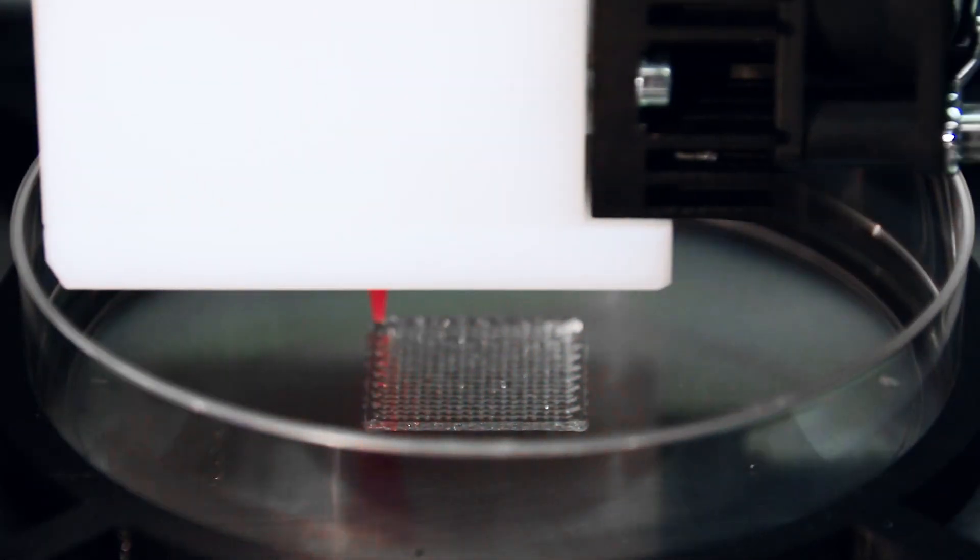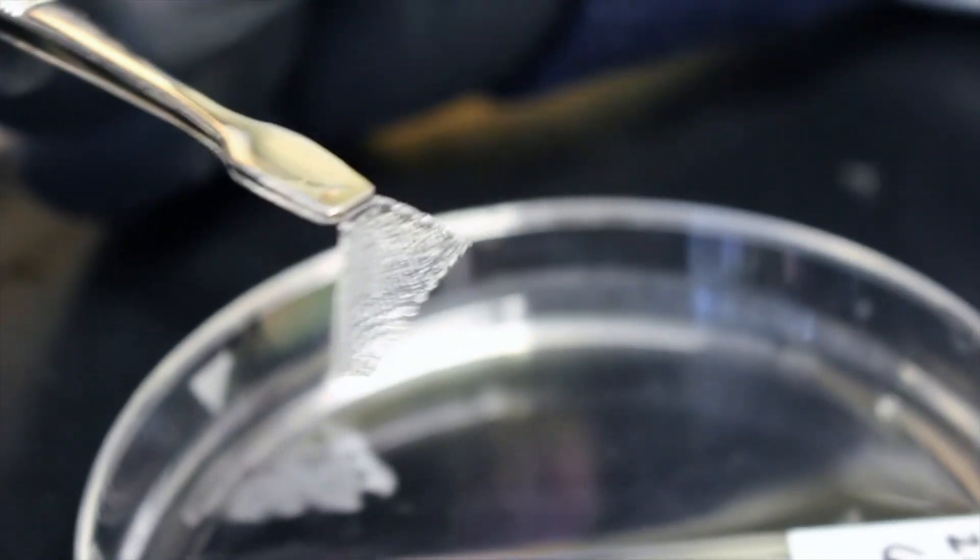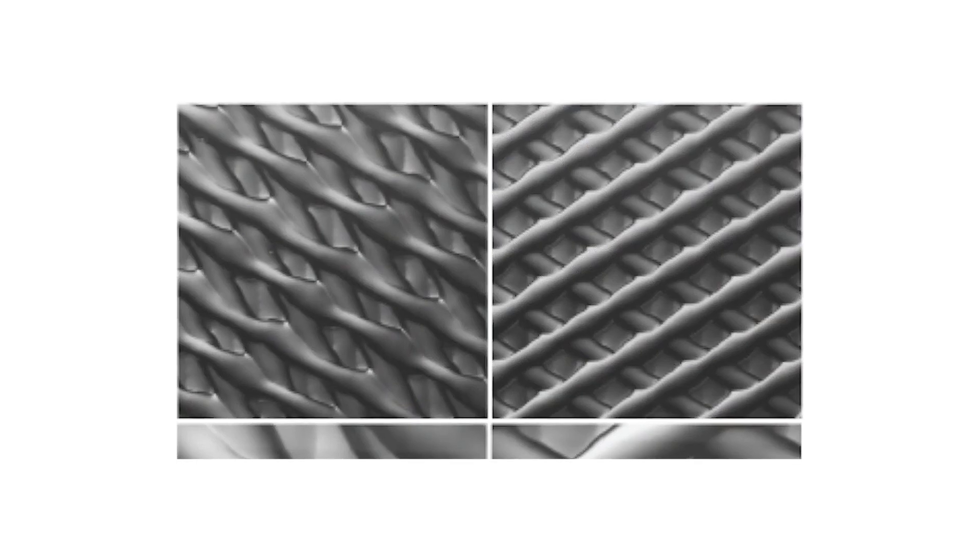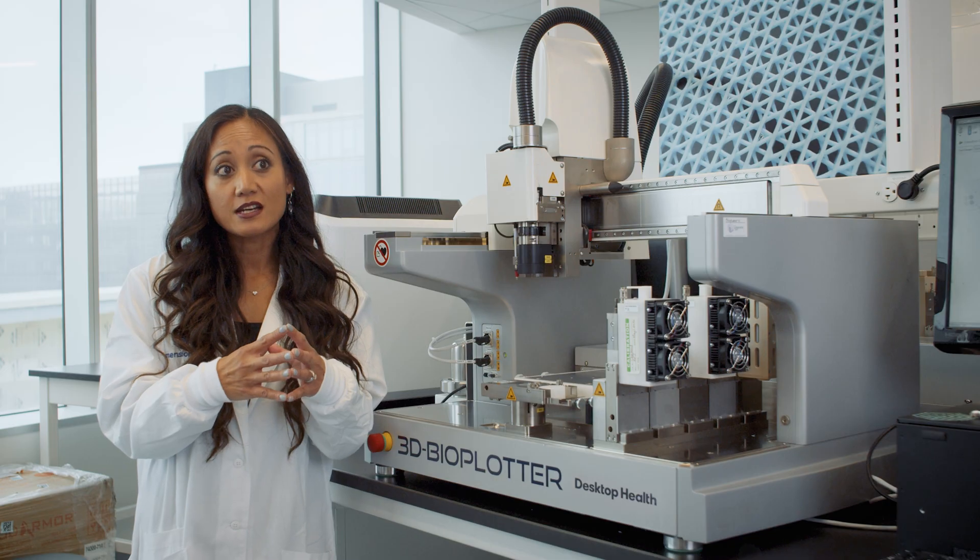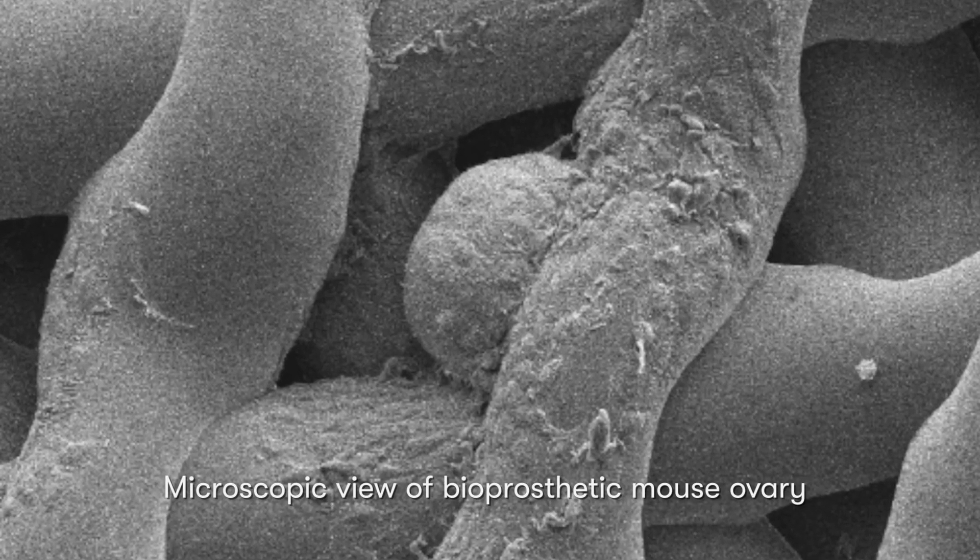What we specifically looked at is how architecture played a major role in follicular development when follicles from an ovary were placed inside this artificial macro environment with different architectures. And what we saw is that the architecture did play a major role in how the follicles survived and function.